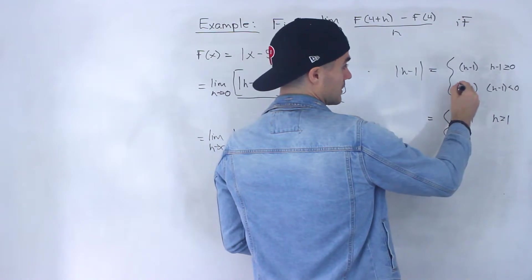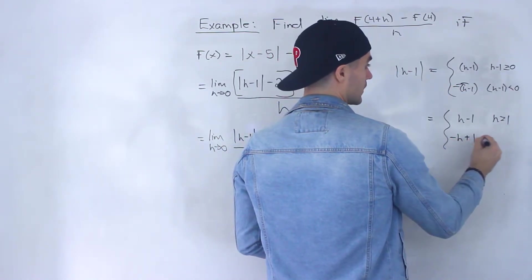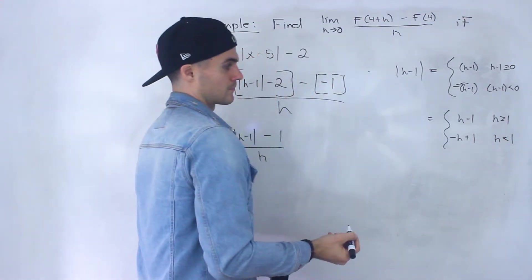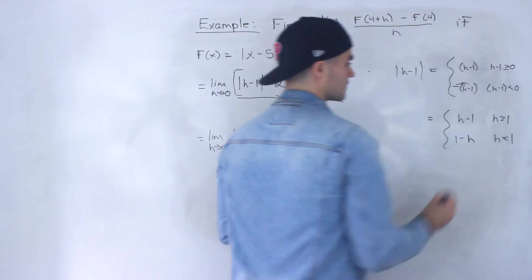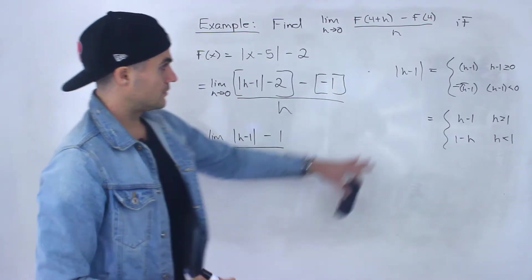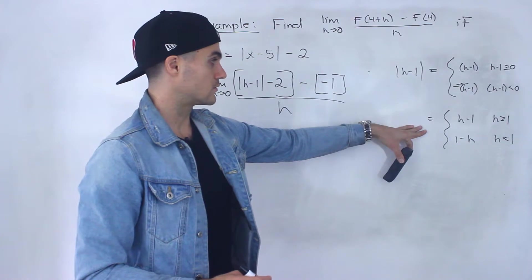Or it's going to be, if we distribute this negative inside the bracket, -h+1 when h is less than 1. Or instead of writing -h+1, we could write 1-h, like that.